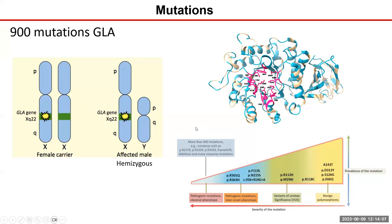Fabry is an X-linked disorder, meaning the gene is present on the long arm of the X chromosome. Multiple mutations have been described — over 900 now. Many are nonsense mutations, some have frameshifts or deletions. As genetic testing becomes cheaper and more accessible, we increasingly see variants of unclear significance: mutations that could potentially be pathogenic because they alter protein function, but you have to tie that to the patient's clinical history and evidence of organ dysfunction before saying that individual has Fabry disease, as it could be a non-pathogenic SNP.